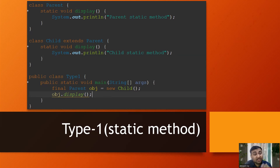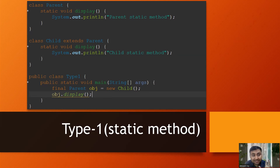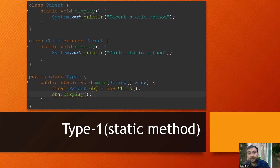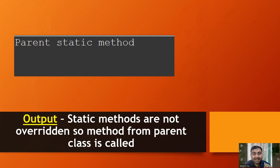We are creating the object of the child class and storing it in a parent reference, then calling the display method. Which method will be called — parent class or child class? Since static methods are not overridden, it will go to the parent class and call its display method. The output will be 'parent static method'. This is method hiding, not method overriding.